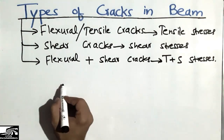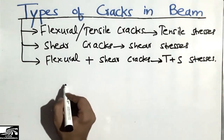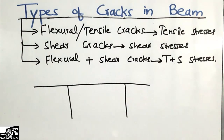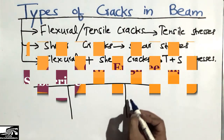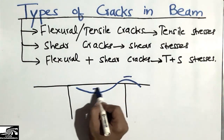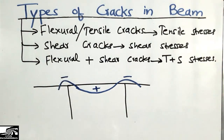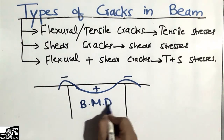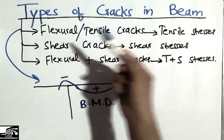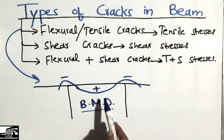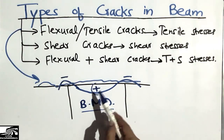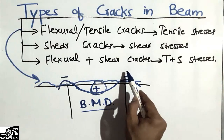Now, where is the location of each type of crack? Let's take an example. Consider a continuous beam supported by columns. When a uniformly distributed load acts on the beam, a bending moment diagram develops — there is a positive bending moment at the midpoint and a negative bending moment at the supports. The beam deflects with maximum bending moment at the midpoint.